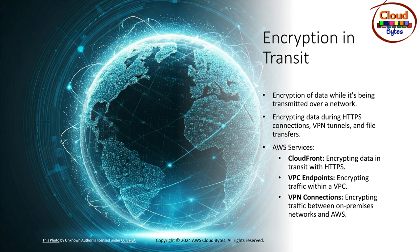Encryption in transit means the data is encrypted while being sent over a channel from point A to point B, traveling on a secure channel. Encrypting data during HTTPS connections, VPN tunnels, and file transfers is where encryption in transit is applied. AWS CloudFront encrypts data in transit using HTTPS, which under the hood uses SSL/TLS, making it difficult for unauthorized parties to intercept or read the message.